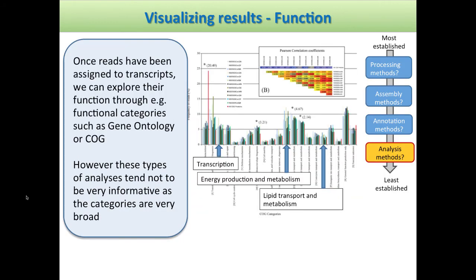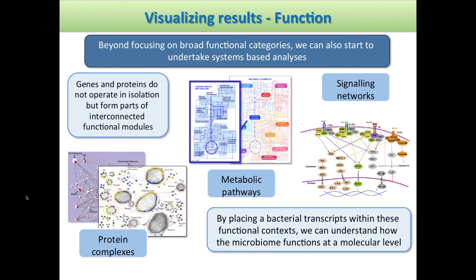In terms of function, in metagenomic papers from about three or four years ago, most functional analyses would just return lists or groups of KEGG pathways that were up or down regulated, or very simple bar charts based on gene ontology or COG annotations. These don't tend to be very informative. Part of the problem is that the categories are very broad. It's been more interesting to place genes into the context of the systems in which they're operating, since genes don't operate in isolation — they're part of highly complex pathways or complexes performing some common function.